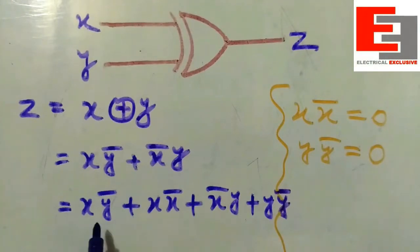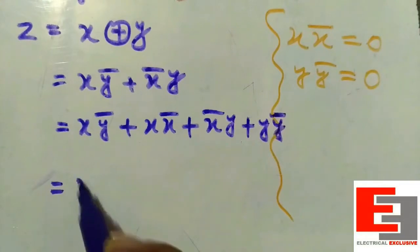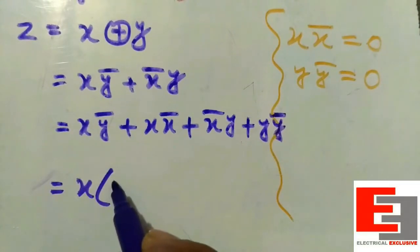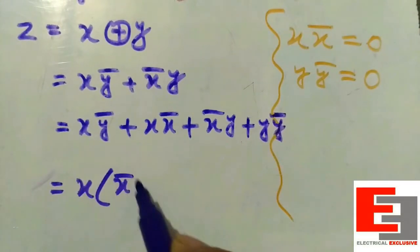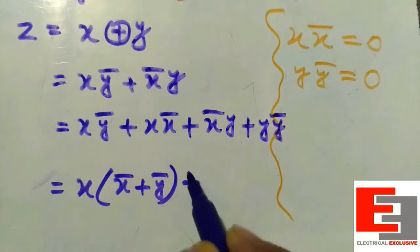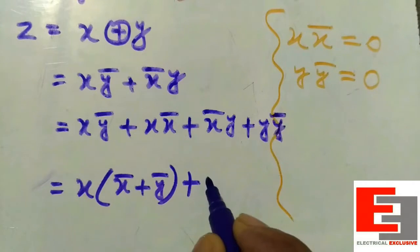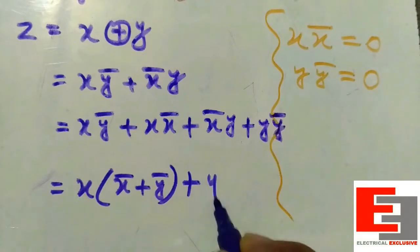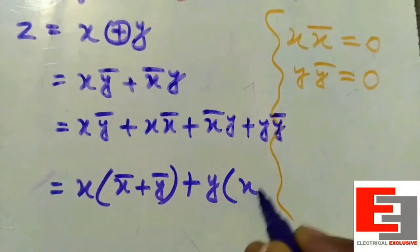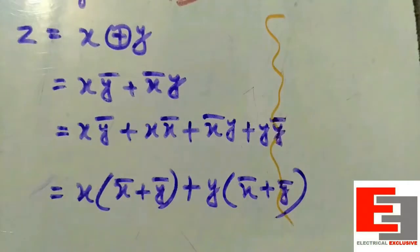Now you can see for the first two terms X is the common factor: X into (X̅ + Y̅). For the second two terms Y is the common factor: Y into (X̅ + Y̅).